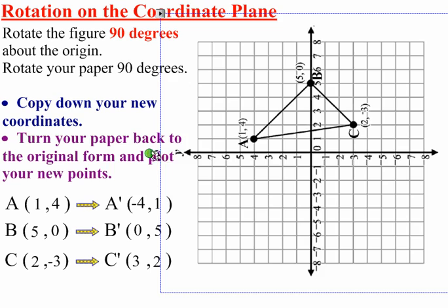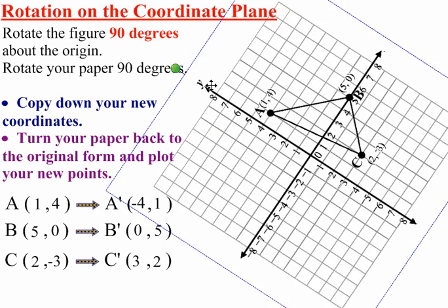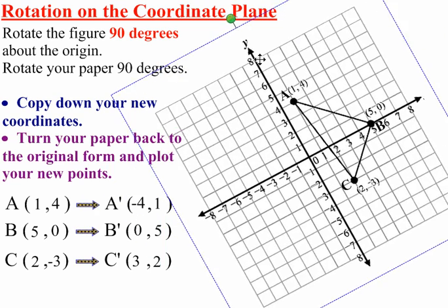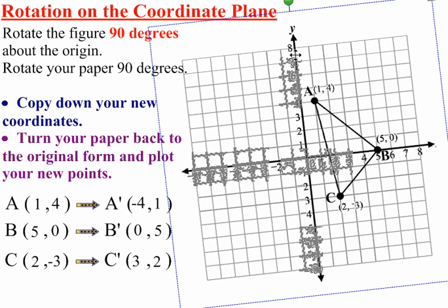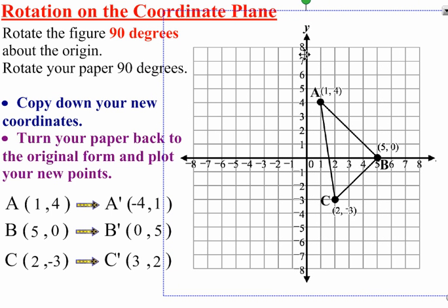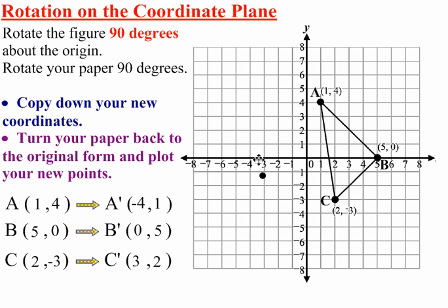Once you have that, you have all of what you need to graph it again, graph the image under the rotation. Rotate your paper back to the original way it was, and now you're going to put your points on. A prime is negative 4, 1, and that's A prime. Label it A prime as soon as you put the point down.